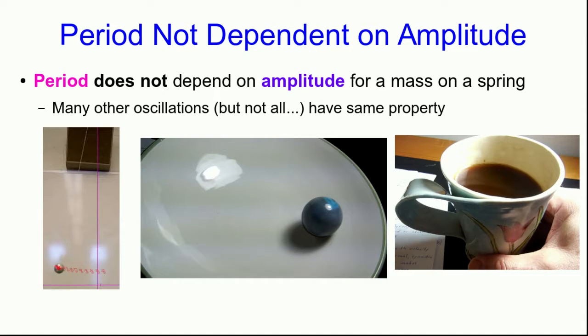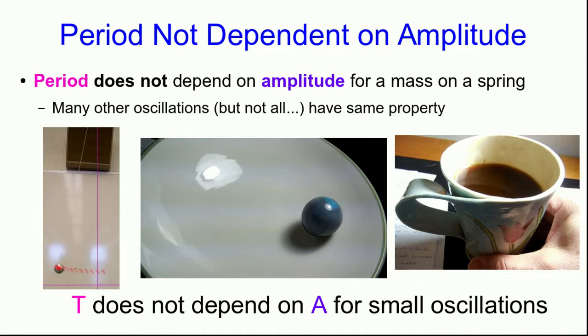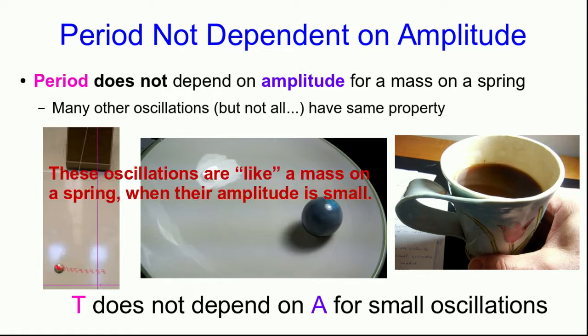So the period doesn't depend on the amplitude for a mass on a spring. That turns out to be true for many, but not all, other oscillations. For example, a pendulum, a ball rolling in the bottom of a bowl, and the surface of coffee oscillating in a mug all have this same property — their period does not depend on the amplitude. Although for these, that's only true for small oscillations, small amplitudes. Whereas for a mass on a spring it's true for any amplitude. What this tells us is that as long as the amplitude of their oscillations is small, these oscillations are like a mass on a spring.